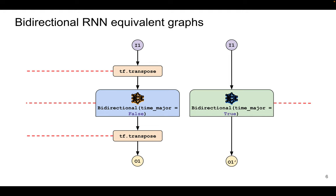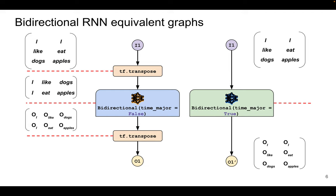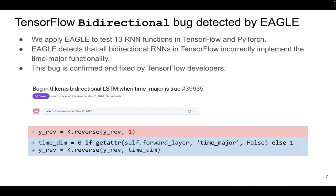Inspired by these two input formats, we can build a pair of equivalent graphs. Given the same time major input, we can directly feed it to the bidirectional RNN function with the time major parameter set to true, or we can first transpose it to batch major format, feed it to the bidirectional RNN with time major set to false, and then transpose its output back to time major. These two outputs should be equivalent. However, if there's a bug in one graph, we may detect inconsistencies. In our experiment, we apply EGLE to test 13 RNN functions in TensorFlow and PyTorch. EGLE detects that all bidirectional RNNs in TensorFlow incorrectly implement the time major functionality. This bug is confirmed and fixed by TensorFlow developers.